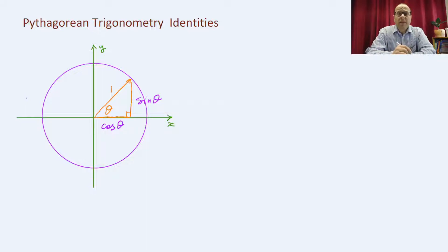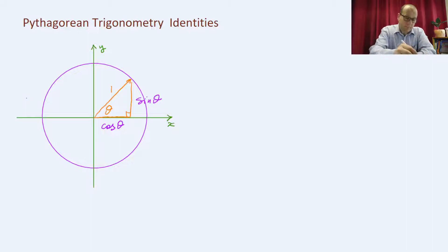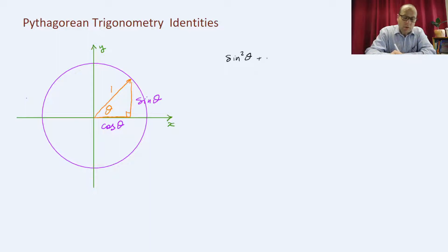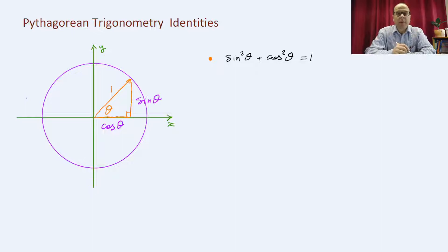From the right angle triangle we write the Pythagorean theorem, which says that sine squared theta plus cos squared theta is equal to 1. That is the first Pythagorean trig identity.